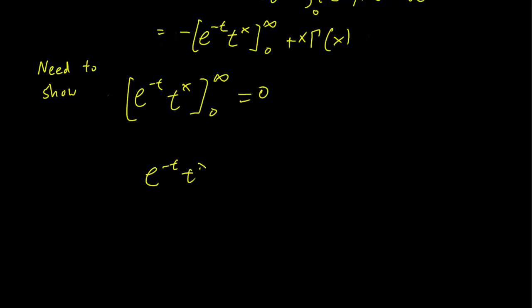e to the minus t times t to the x from infinity to 0 is equal to the limit as b goes to infinity of e to the minus b times b to the x minus e to the minus 0 times 0 to the x. This is clearly just 0.